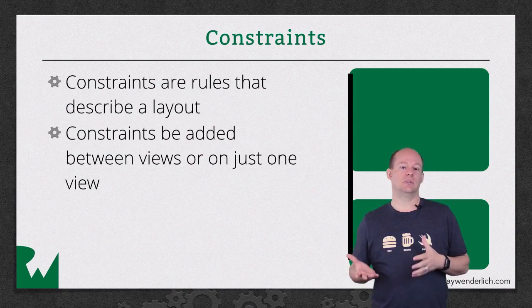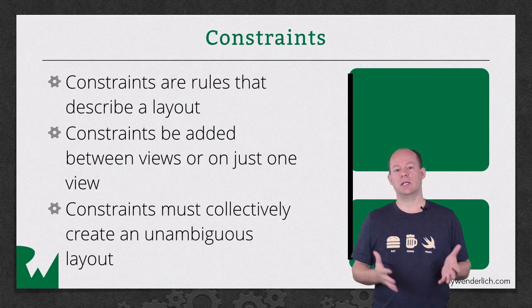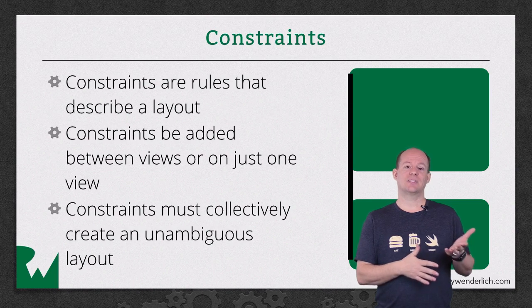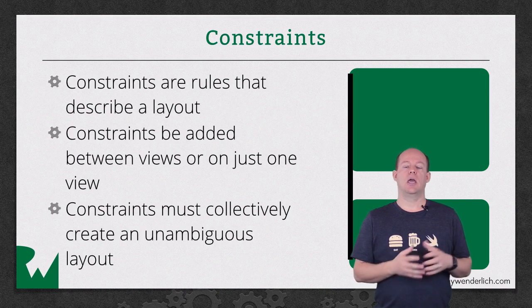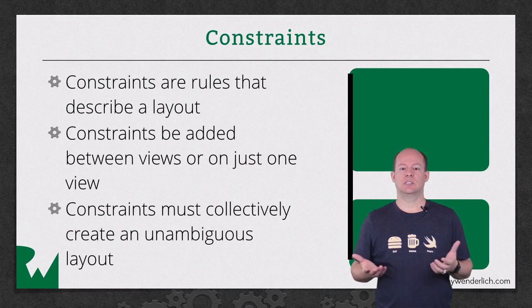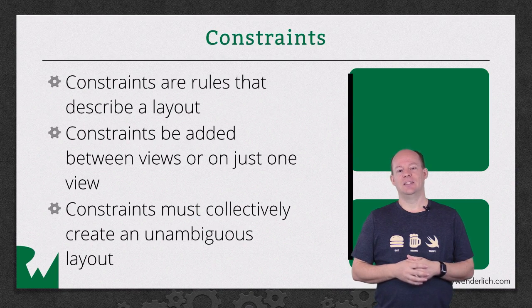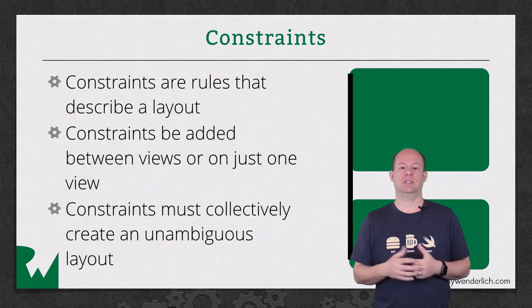In order for the Auto Layout system to completely lay out your interface, all the individual constraints that you define should collectively fully describe the x and y position and width and height of each element. If you don't define enough constraints, that's called an ambiguous layout — there are multiple layouts that satisfy the defined constraints. If you provide conflicting constraints, that's called unsatisfiable constraints — there are no layouts that satisfy them. In either case, Auto Layout will try to degrade gracefully, but the results will be unpredictable. You'll learn how to identify these situations and resolve them by using priorities, adding missing constraints, or removing conflicting constraints.